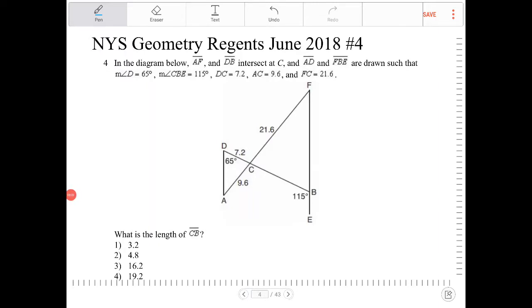In a diagram below, AF and DB intersect at C. AD and FBE are drawn such that angle D is 65, CBE is 115, DC is 7.2, AC is 9.6, and FC is 21.6. What is the length of CB?